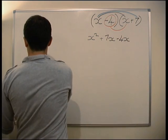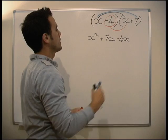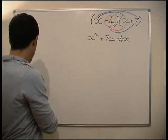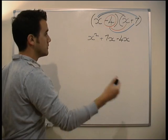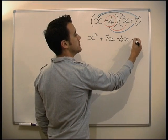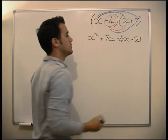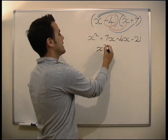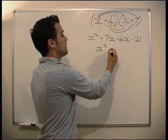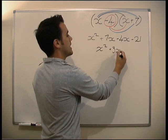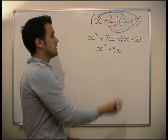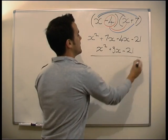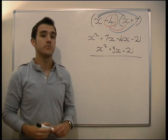And then last but not least, we do the minus 4 times the plus 7. Minus times a plus gives us a minus, so minus 21. Then we simplify: x² plus 3x, because 7 minus 4 is 3, minus 21. And that's us multiplied out.